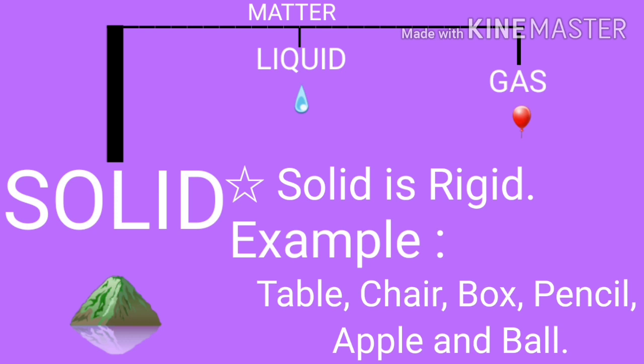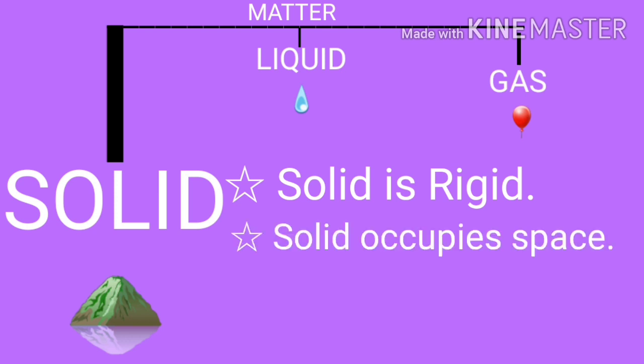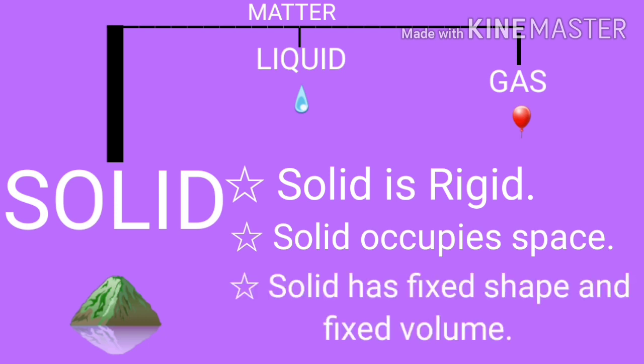We can see many examples. Solid occupies space. Solid has fixed shape. Solid has fixed volume.